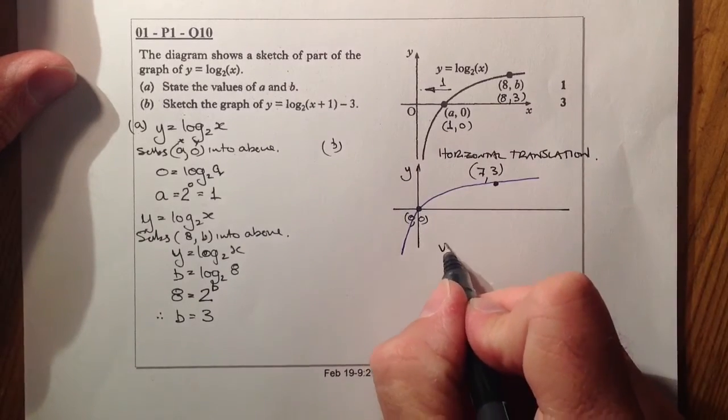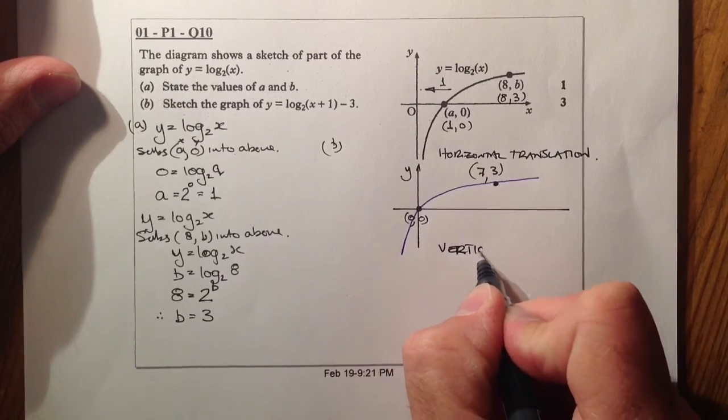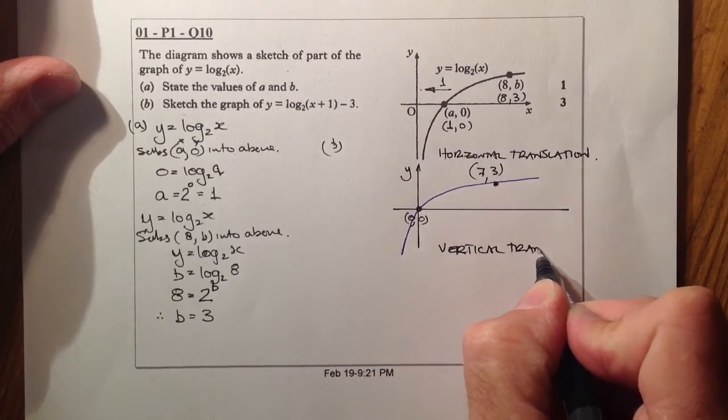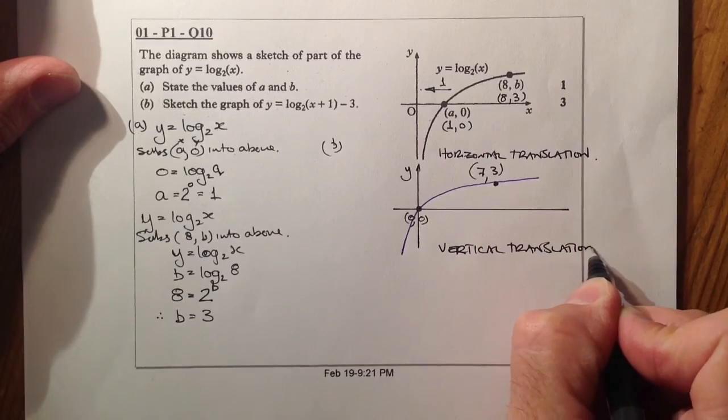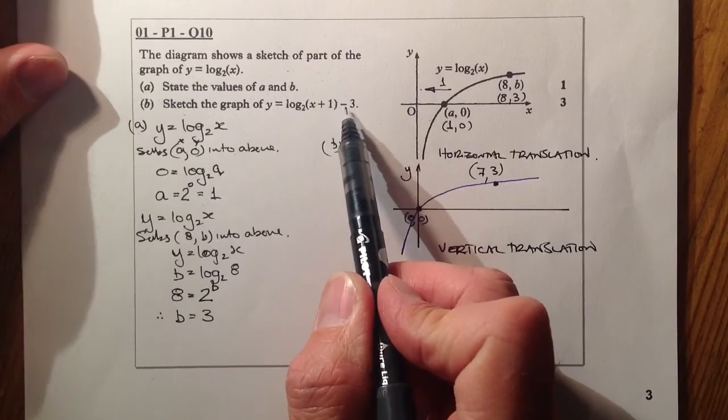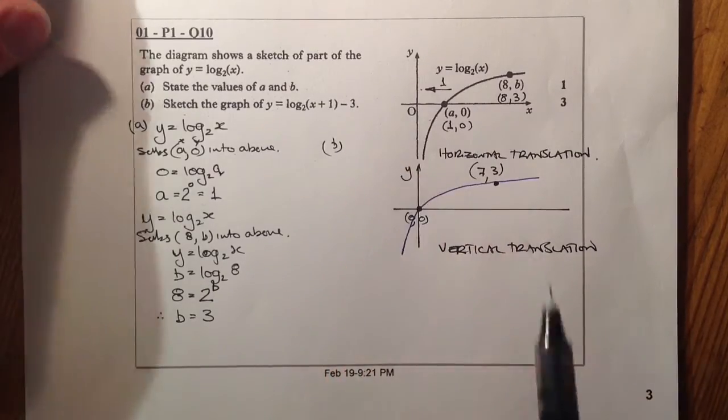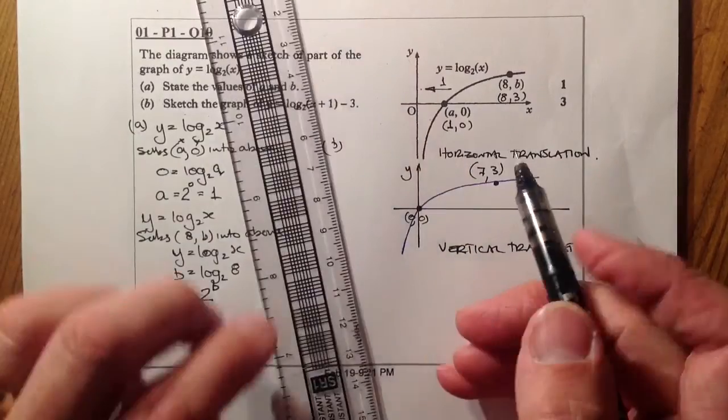Next what we'll do is we'll do a vertical translation. The vertical translation is based on this value that's out here. If it's a positive, it's going to go up the way. If it's a negative, it's going down the way. So we're going down 3 for this one here.